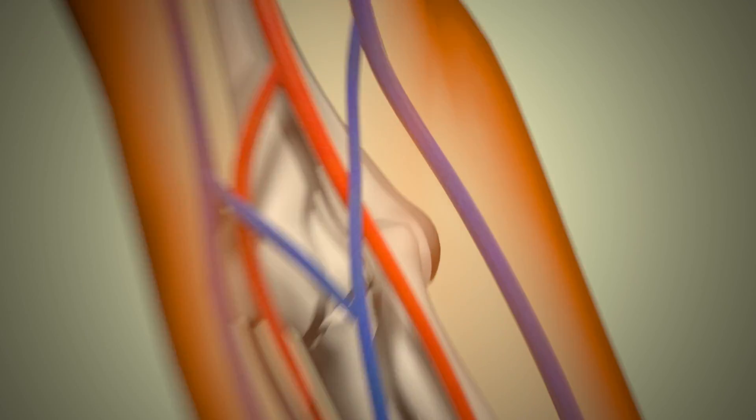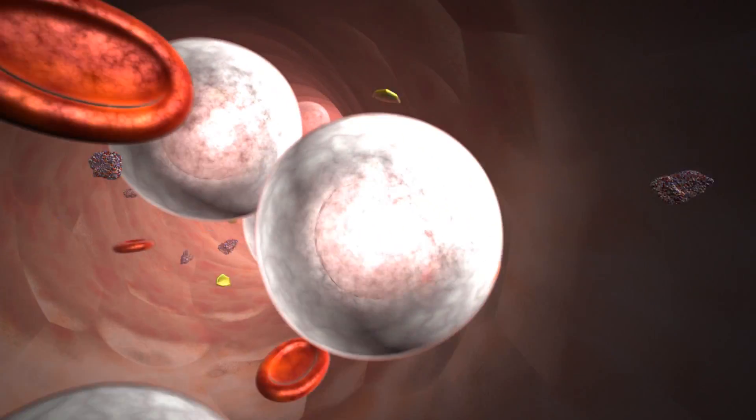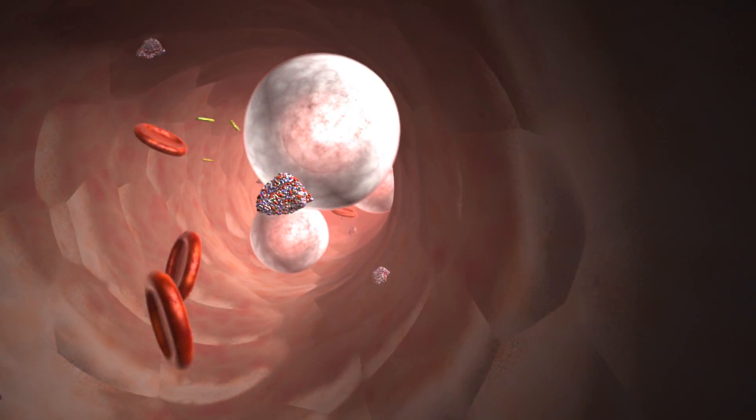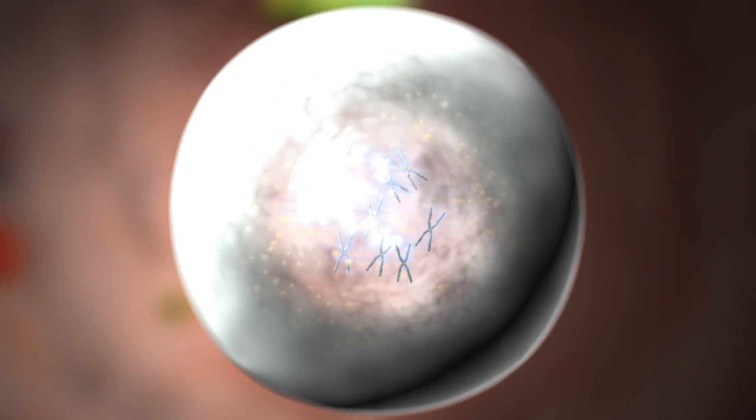Chronic lymphocytic leukemia is a disease affecting white blood cells. Its development is associated with molecular alterations in the DNA, which is found in the nucleus of the cells.